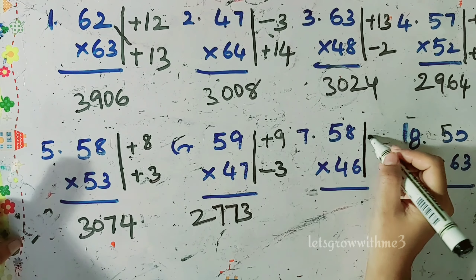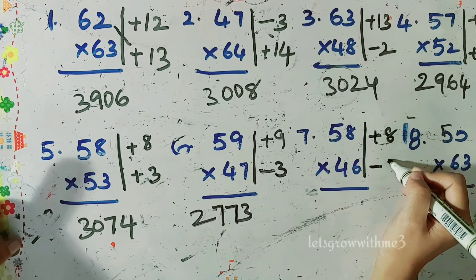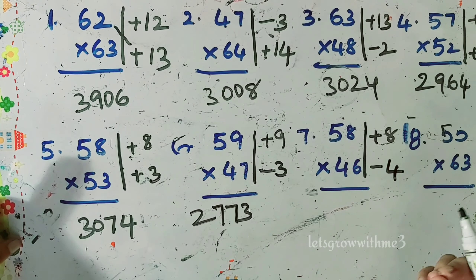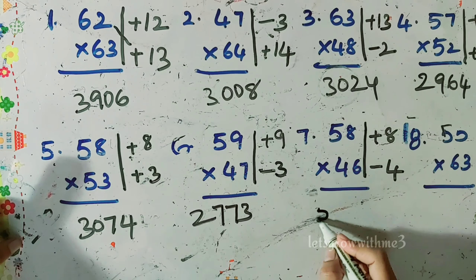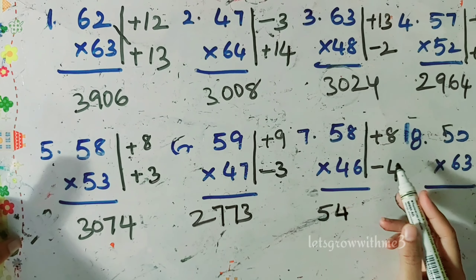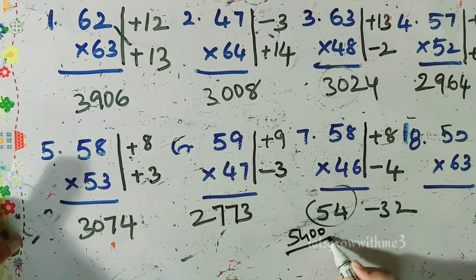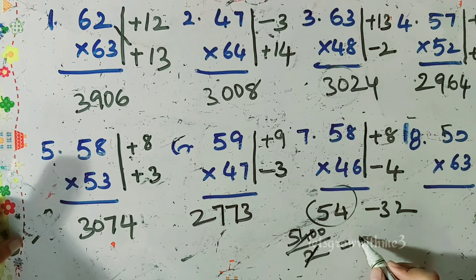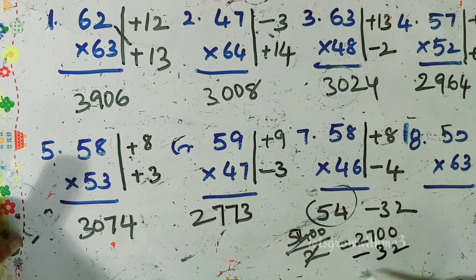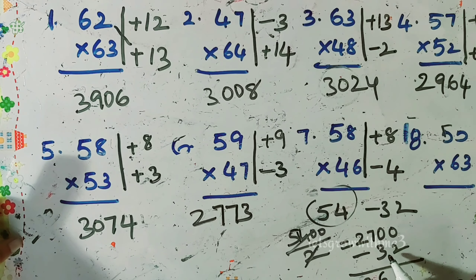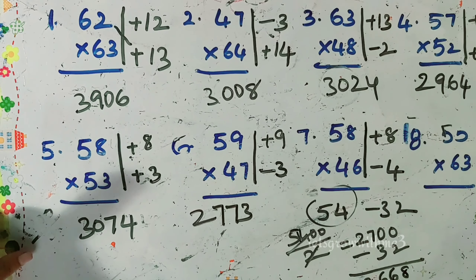Next: plus 8 and minus 4. Cross subtraction gives 54, and 8 times 4 is 32 — minus 32. Convert 54 to base 50: 5400 over 2 — 2 twos are 4, 7 twos are 14 — giving 2700. Subtract 32 from 2700: because of borrow, the answer is 2668.